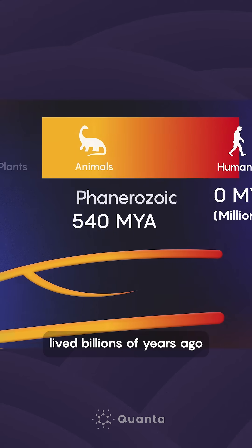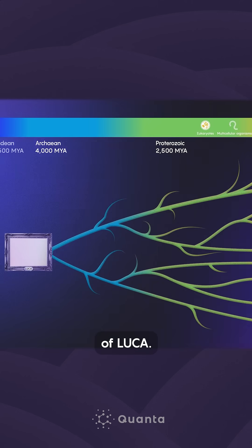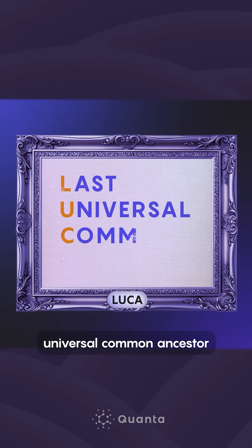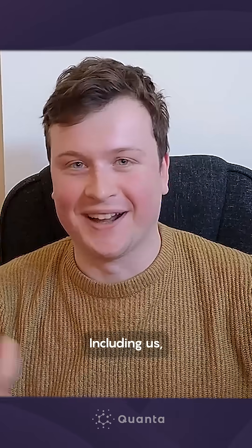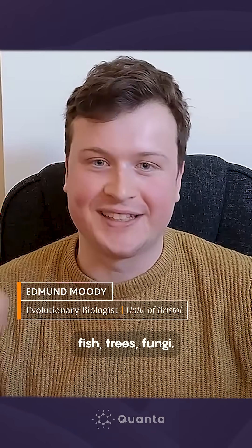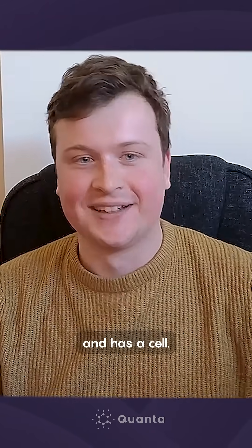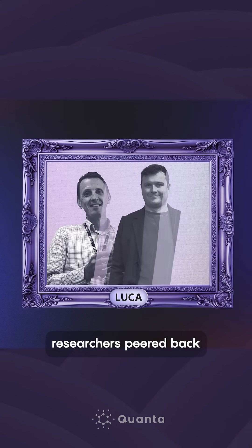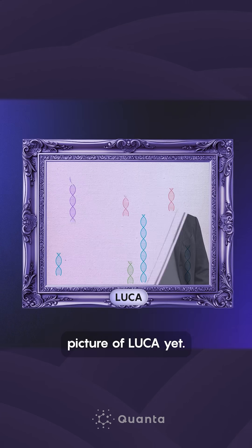You have an ancestor that lived billions of years ago who goes by the name of LUCA. LUCA is the last universal common ancestor to all modern life on Earth — including us, bacteria, frogs, fish, trees, and fungi. Everything that is alive and has a cell. To reveal our evolutionary history, researchers peered back in time to paint the most complete picture of LUCA yet.